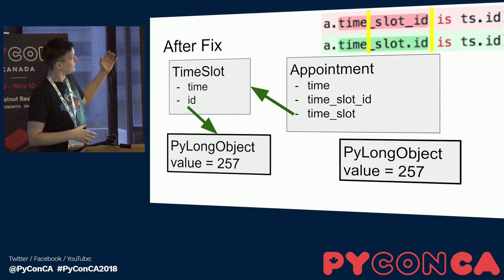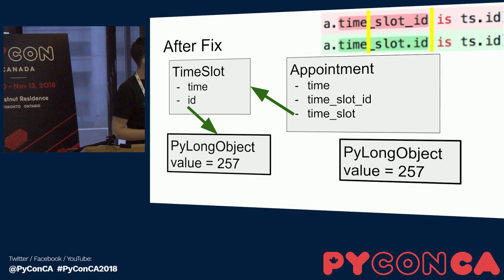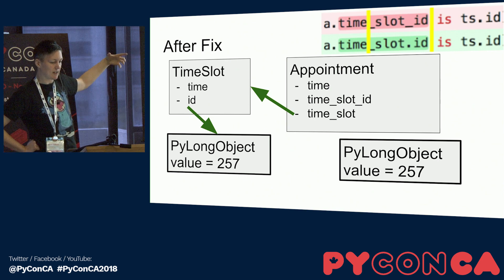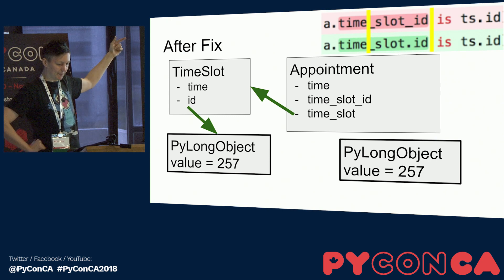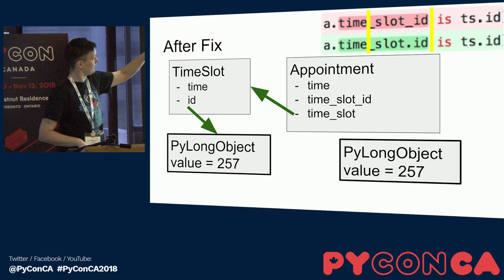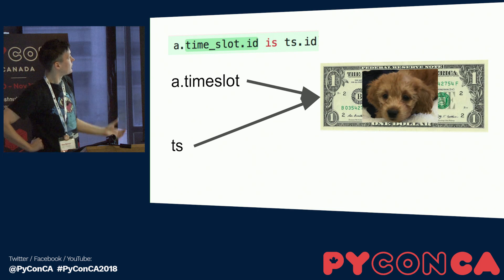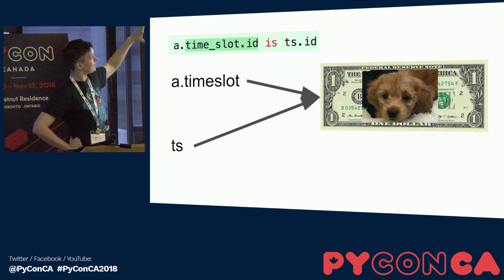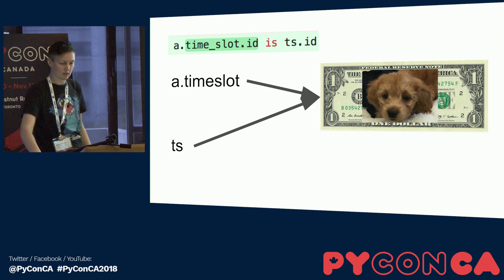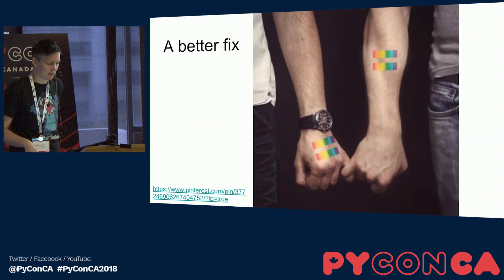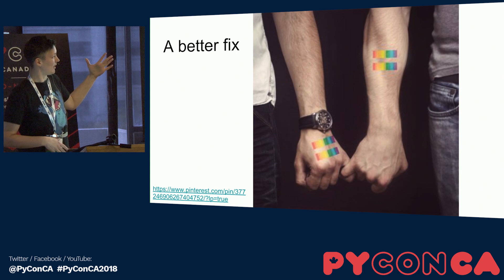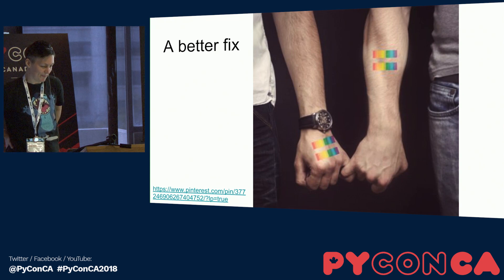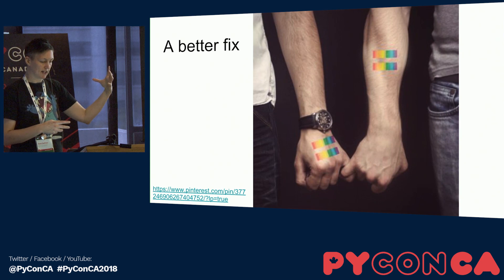By changing the underscore to a dot, instead of looking at `time_slot_id`, we're looking at the same time slot — the same PyLong object — twice. The fix worked because I used attribute access notation to access the time slot, and the appointment object had a reference to the time slot object. So `a.timeslot` and `ts` point to the same object on the heap. An even better fix would have been to use double equals, looking at the contents of the PyLong object instead of the object itself.